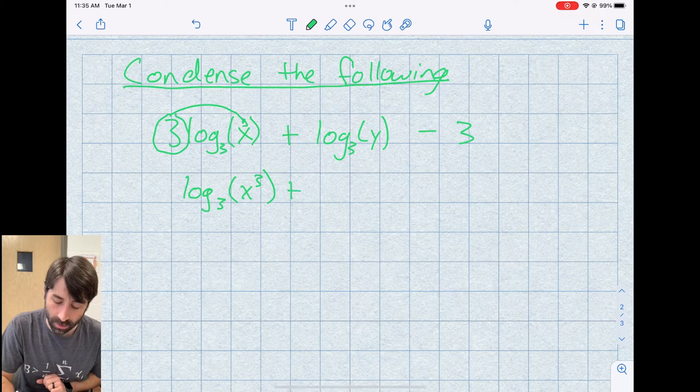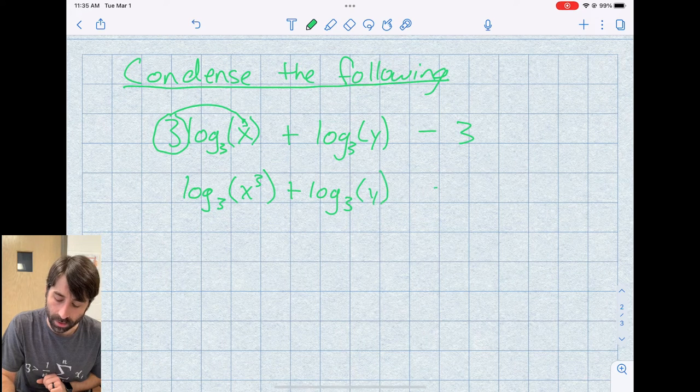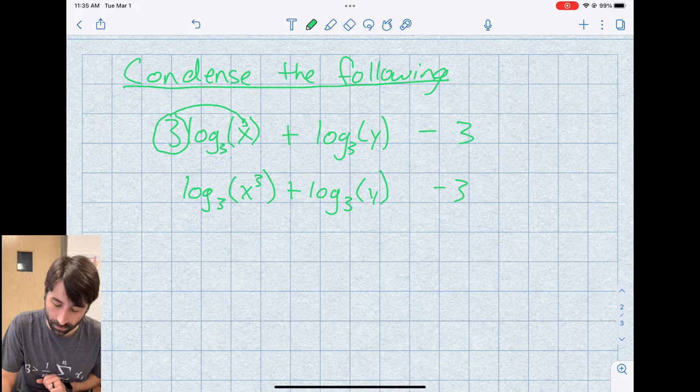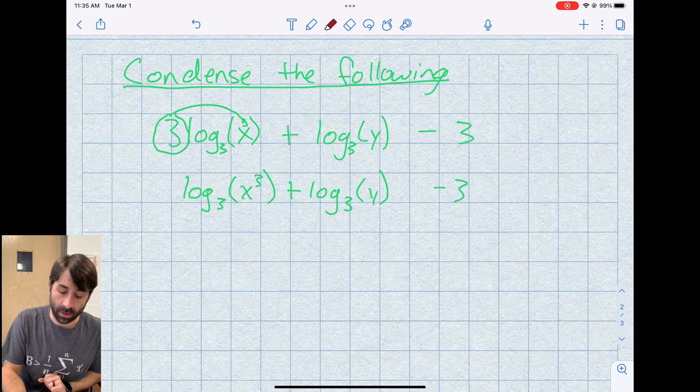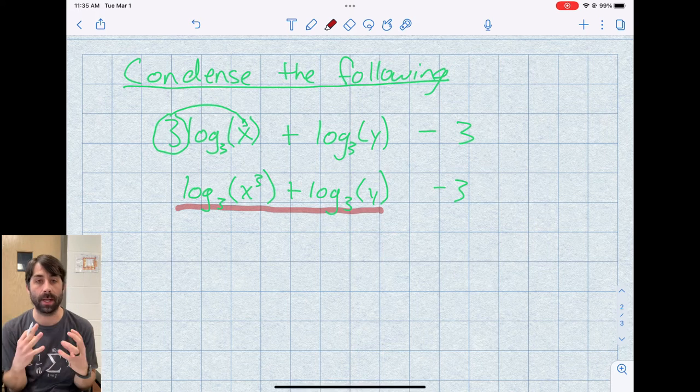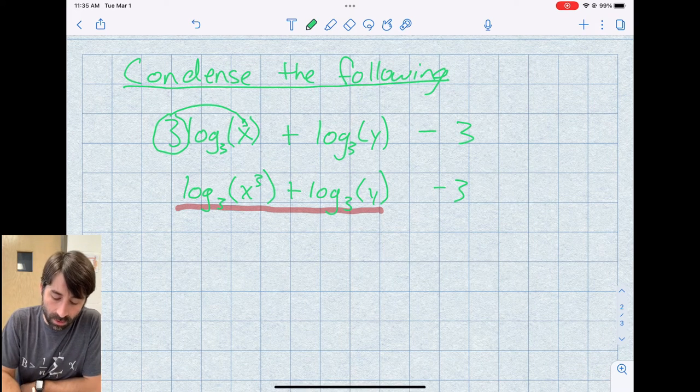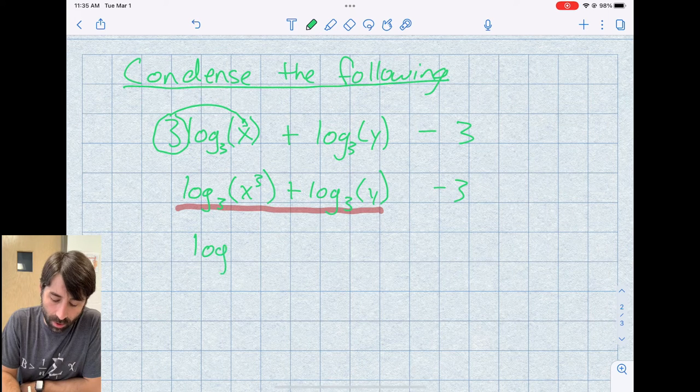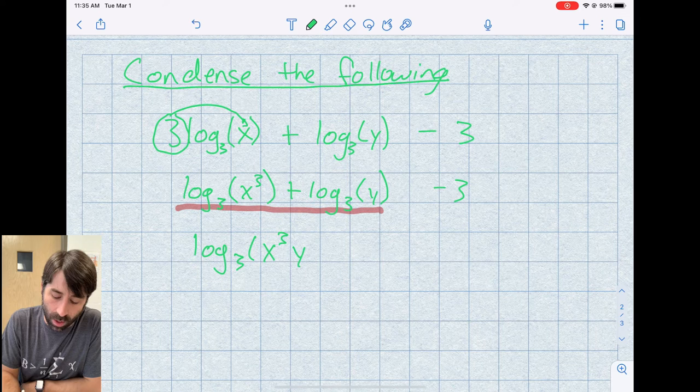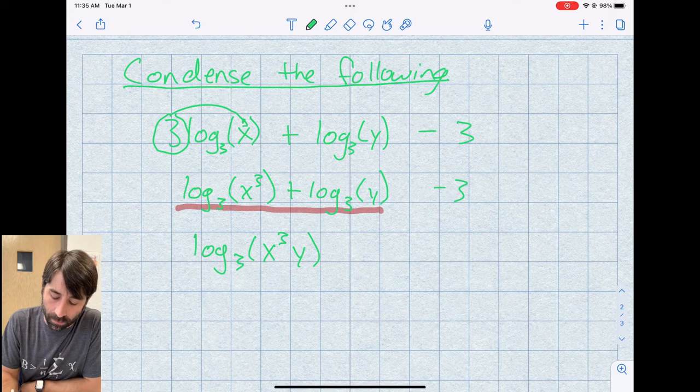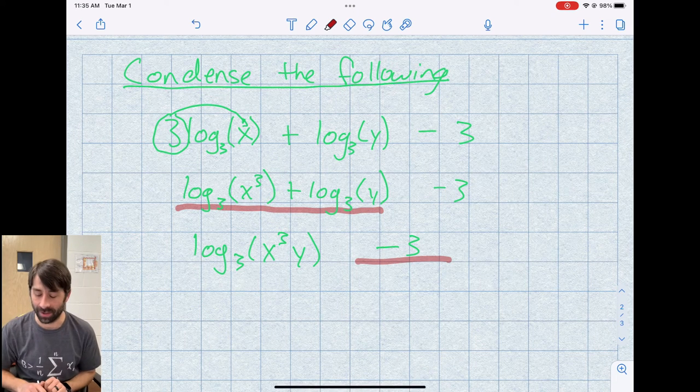This is still log base 3 of y at this point. And this is still minus 3. So now on these first two terms, they are currently a sum. So if I wanted to condense those into a single log, I turn those into a product. And so I can have log base 3 of x cubed y, all in one log. And now we've got this minus 3 over here.